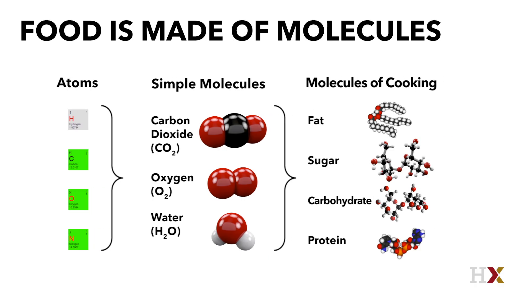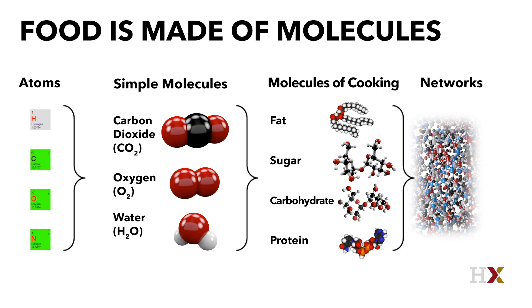Food molecules are more complex than atoms and also more complex than simple molecules. The molecules of cooking — namely fats, proteins, and carbohydrates — tend to be much larger molecules which themselves also contain atoms such as carbon, nitrogen, oxygen, and so on. One of the unusual things about cooking is that the basic molecules of food, the basic fats and sugars, tend to form very large networks or agglomerated structures which make up the structure of food — and also, for that matter, of us.